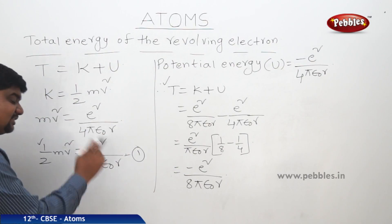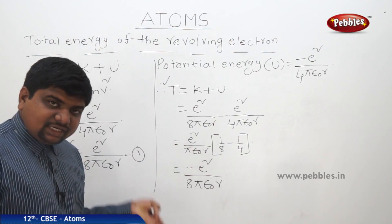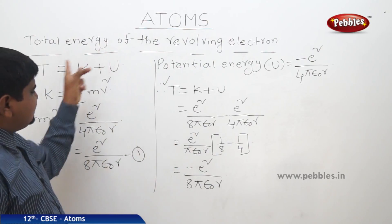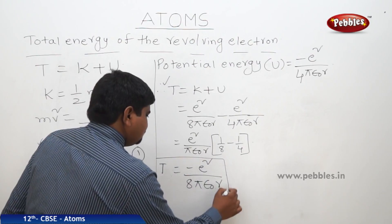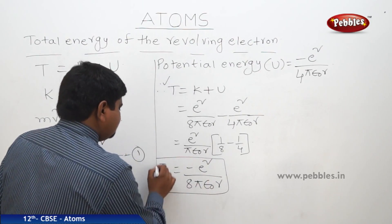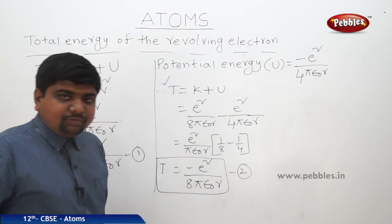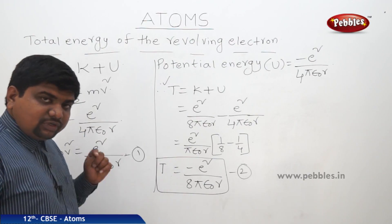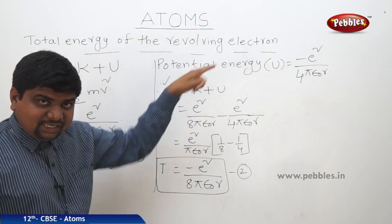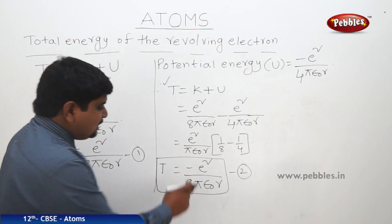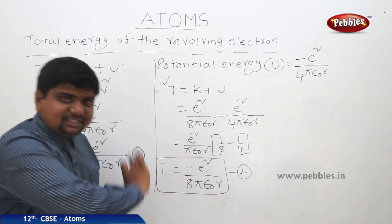Kinetic energy equals plus E-squared over 8 pi epsilon-0 R, while total energy equals minus E-squared over 8 pi epsilon-0 R. So what we can understand from these expressions is that the total energy of the revolving electron in any atomic structure is equal to the negative of its kinetic energy.